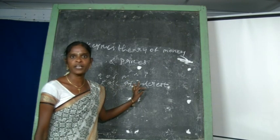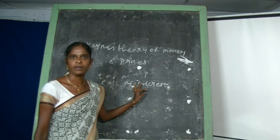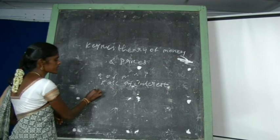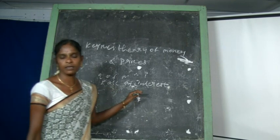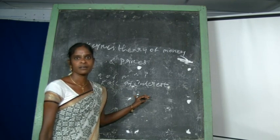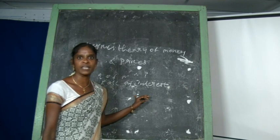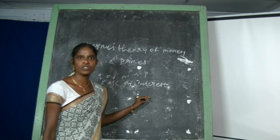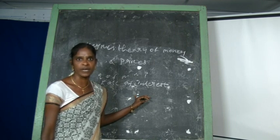Economics has been divided into two compartments. The relationship between the quantity of money and the price level is such that if the quantity of money is increased, there is no direct and proportionate relationship with the price level.